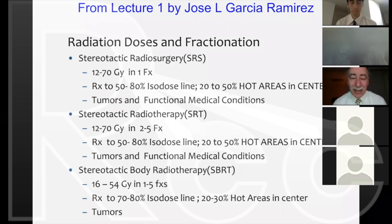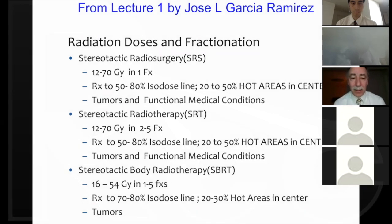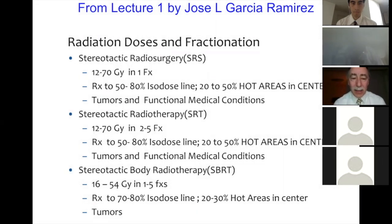In the last lecture, Jose Garcia Ramirez told us about the physics of stereotactic radiosurgery, stereotactic radiotherapy, and SBIR-SBRT. In those techniques, doses are high, so this lecture is on the radiobiology of high doses — above 12 gray, though the biology really changes between 8 to 10 gray.